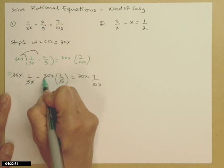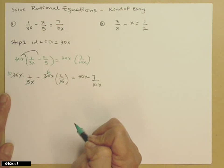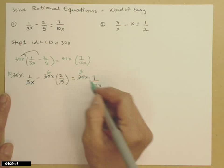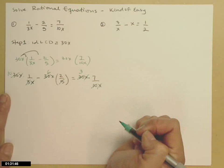The 5 goes into the 30, leaves behind 6. And over on the other side of the equal sign, the 10 goes into the 30, leaves behind a 3. The x goes into the x and cancels.